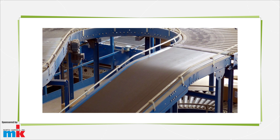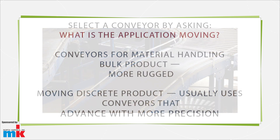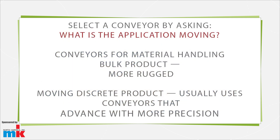Select a conveyor first by asking: what type of product is the application moving? Conveyors for handling a bulk product are more rugged than those for moving discrete product. In contrast, the latter requires conveyors that can advance product with more precision.